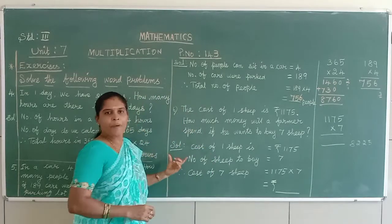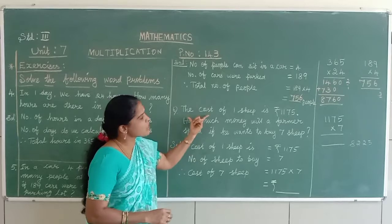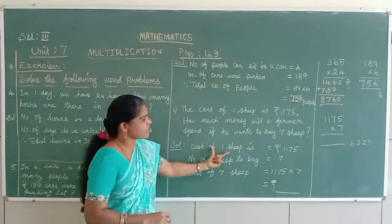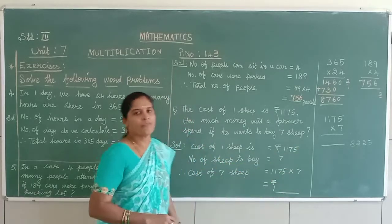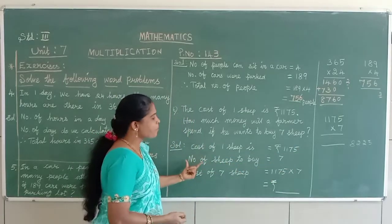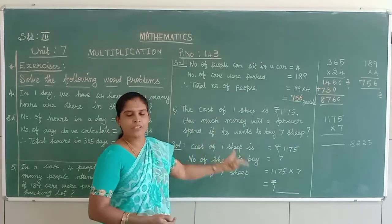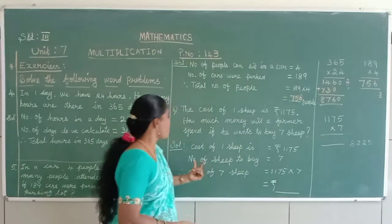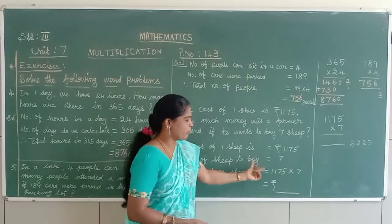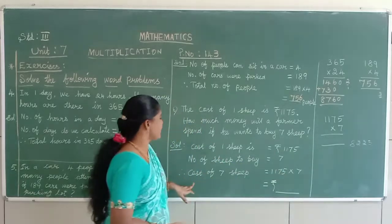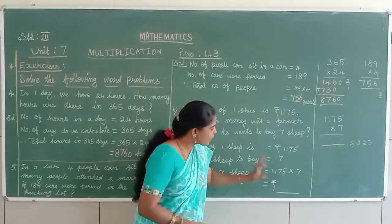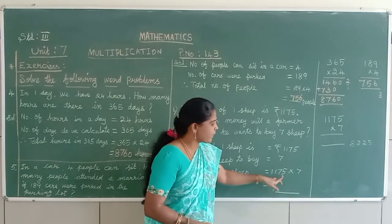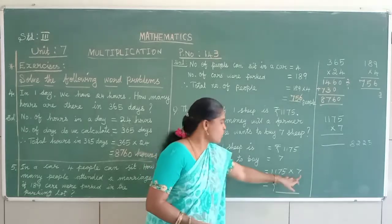In the solution bar, we have to write cost of one sheet is Rs.1,175. And number of sheet to buy 7. Then cost of 7 sheep equal to Rs.1,175 into 7.